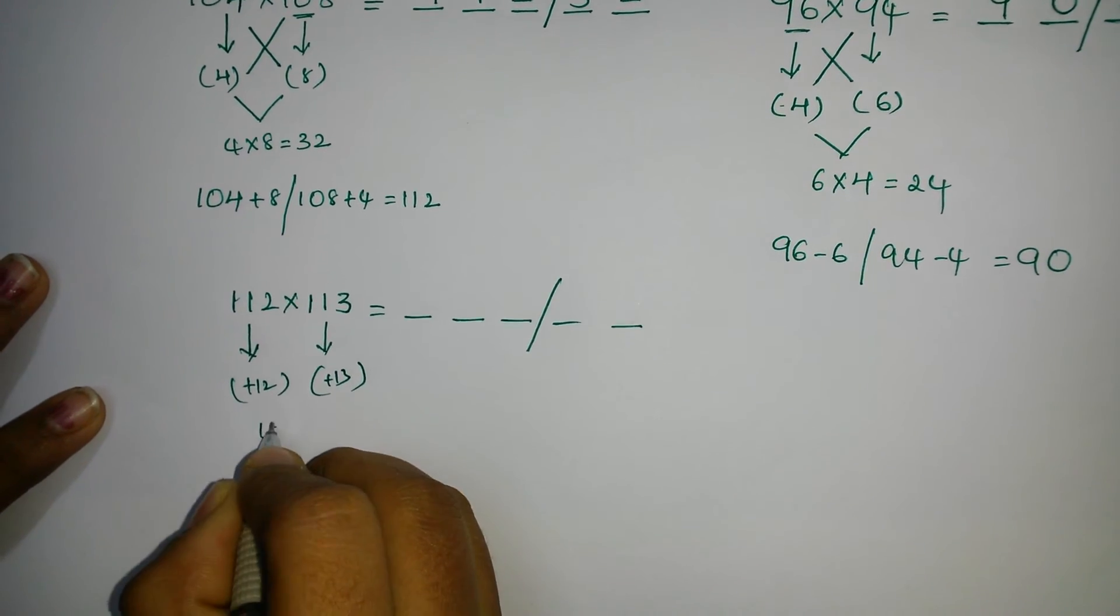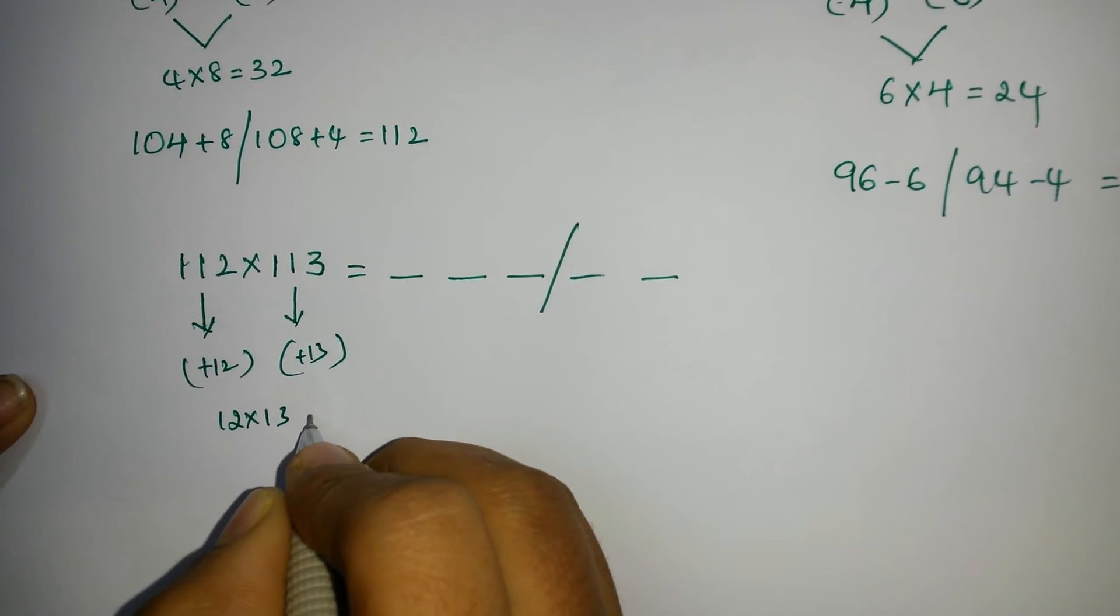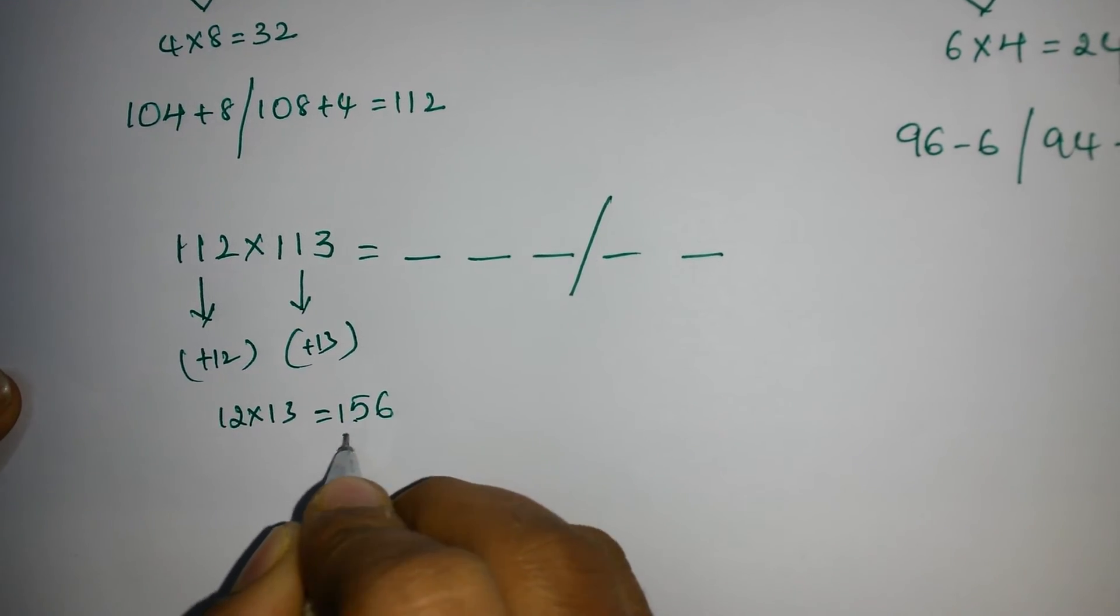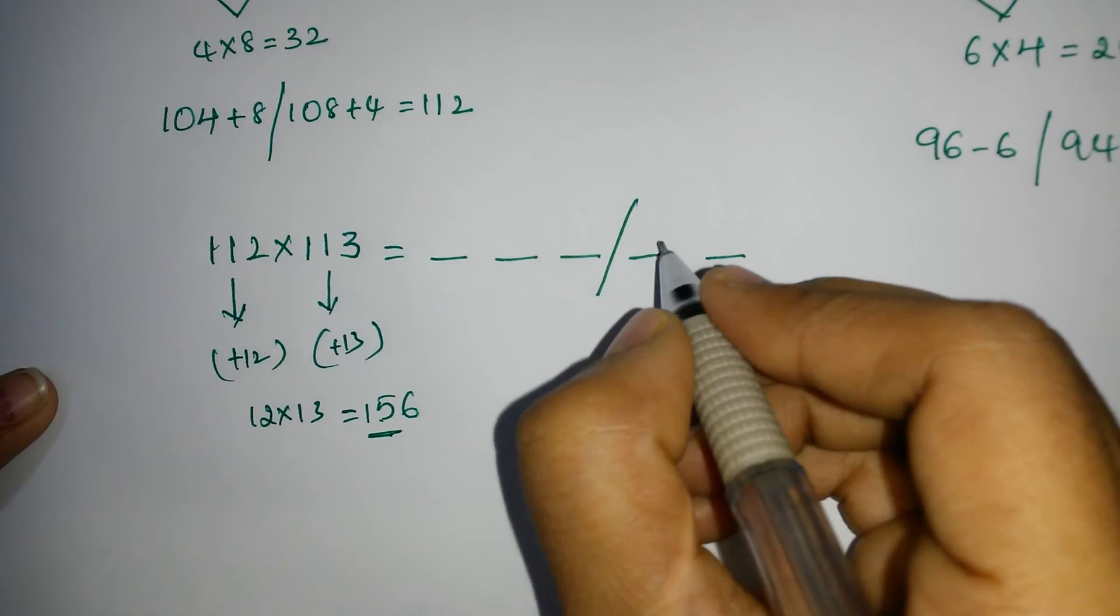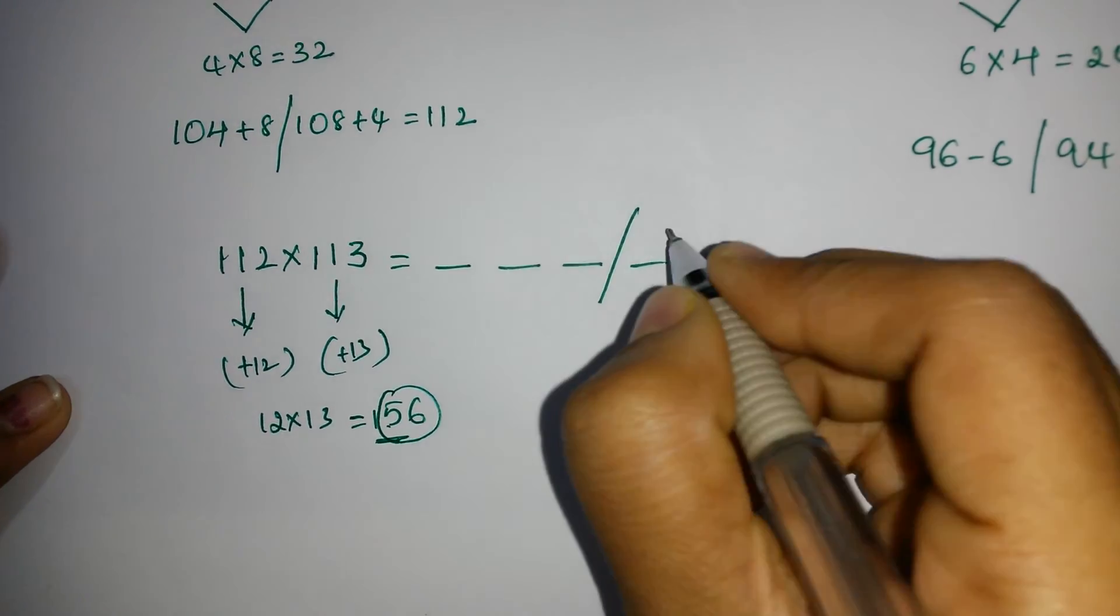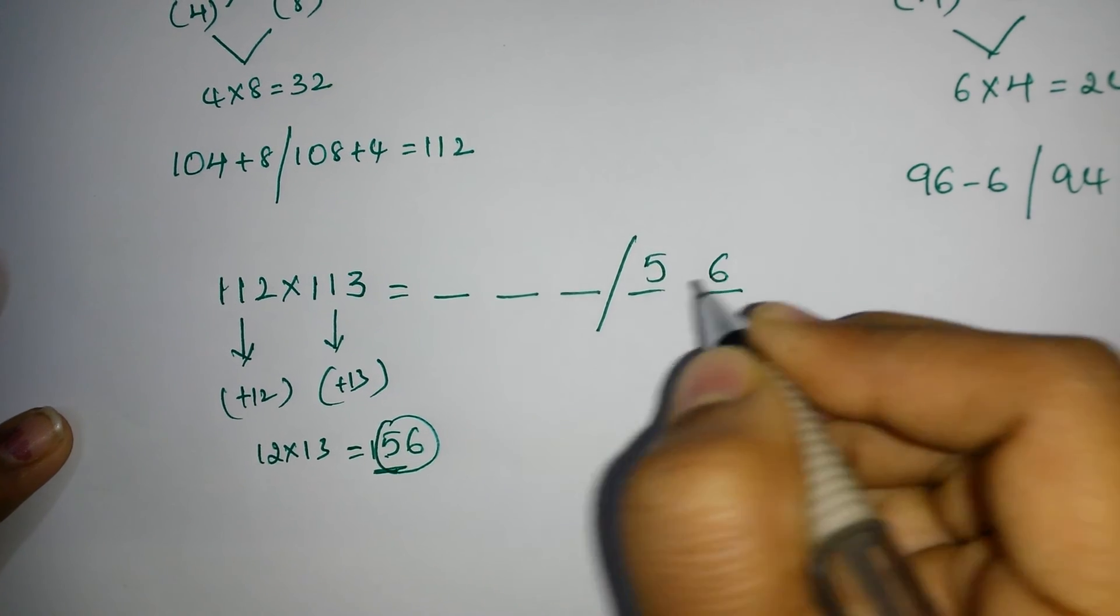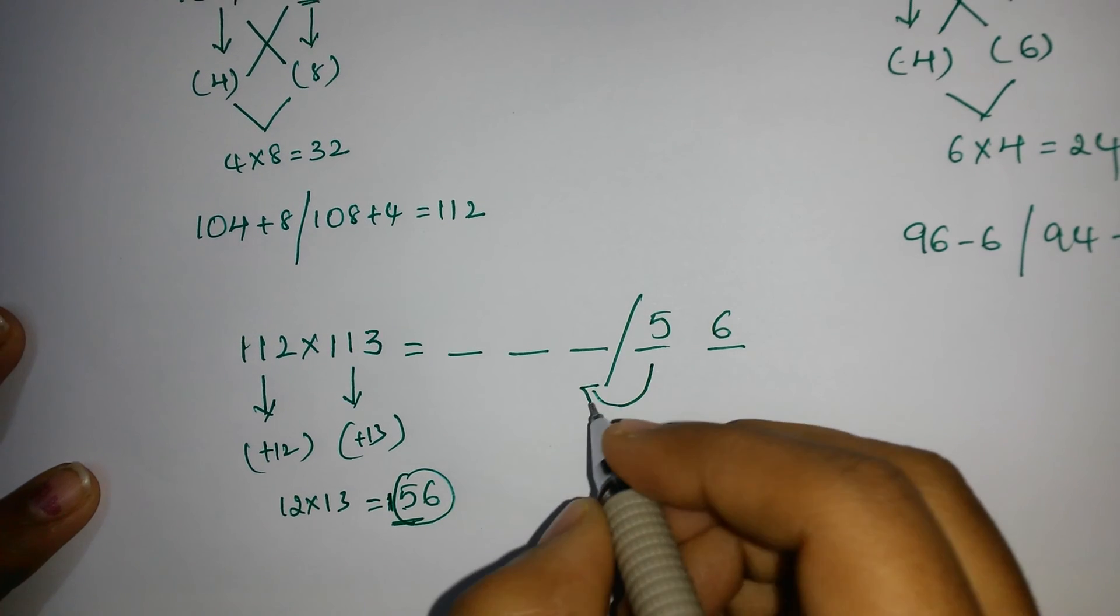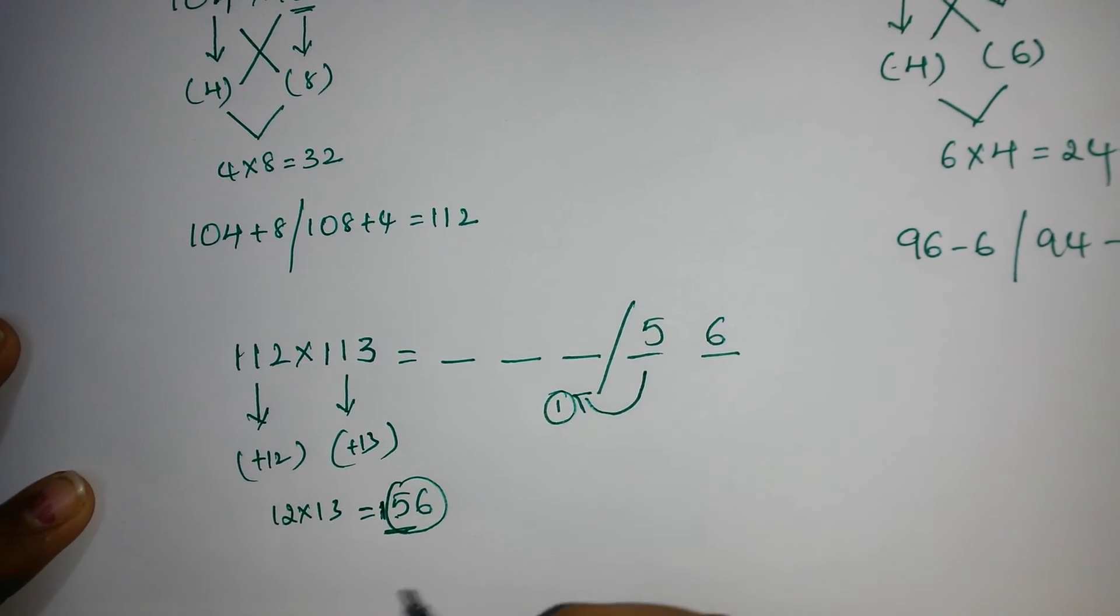So what you have to do is, 12 into 13. 12 into 13 is equals to 156. So the answer we got in 3 digits. So what you have to do is, you have to take only these 2 digits. 56 in the right part. And you have to carry this 1 to the left part. You have to carry here.